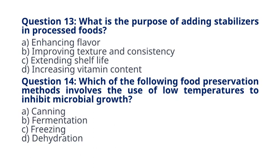Question 14. Which of the following food preservation methods involves the use of low temperatures to inhibit microbial growth? A. Canning B. Fermentation C. Freezing D. Dehydration. The correct answer to question 14 is option C. Freezing. Explanation: freezing inhibits microbial growth by reducing the temperature, preserving the quality of the food.